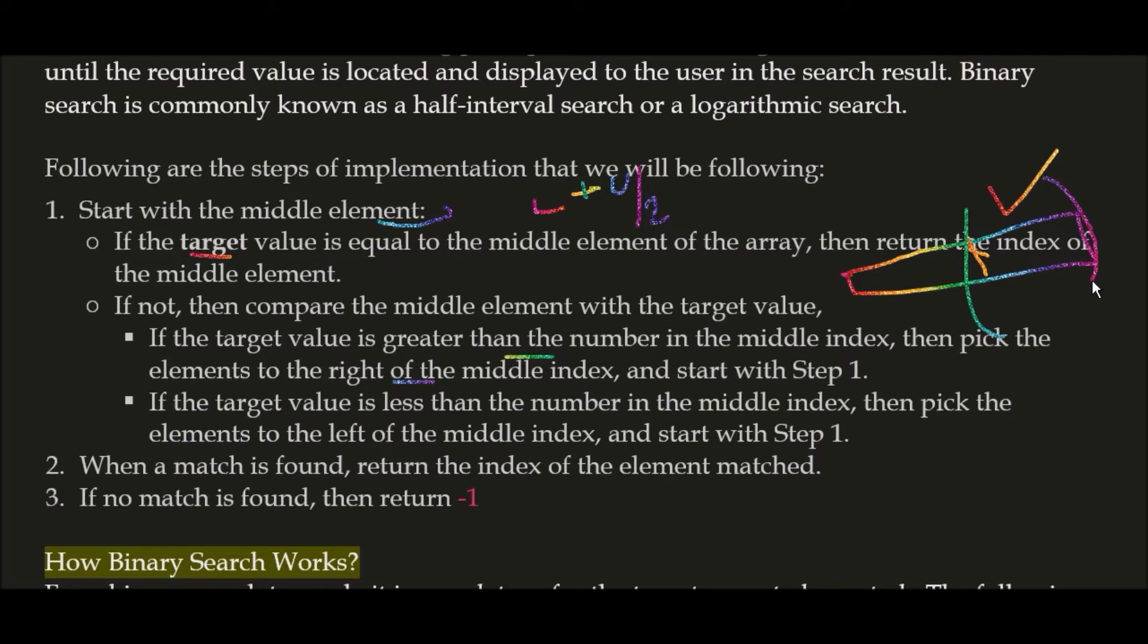Next step: if the target value is less than the number in the middle index, then pick the elements to the left of the middle index. Pick all the lower index values and then start step one again, searching for the mid element in that particular array.